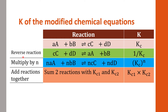If we multiply the original equation by any factor n, so the stoichiometric coefficients change from A, B, C, D to nA, nB, nC, nD, the new K related to the old one would be Kc raised to the power of that factor n.